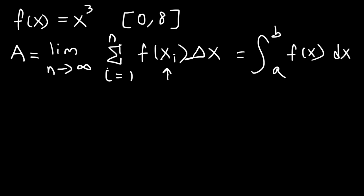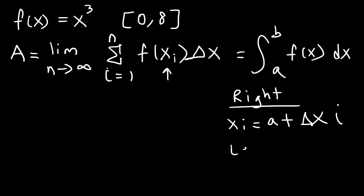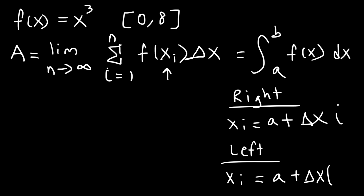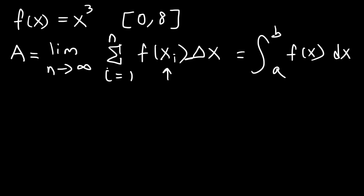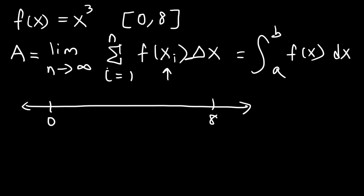So what is x sub i and how can we find it? If you're using the right endpoints, x sub i is equal to a plus delta x times i. If you're using the left endpoints, x sub i is equal to a plus delta x times i minus 1. Let's illustrate the right endpoints because you can use either one to get the same answer, but the right endpoints is a lot easier. For this illustration we're going to say that n is 4, though for the actual problem n goes to infinity.